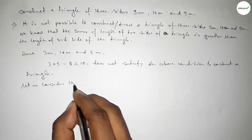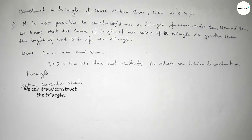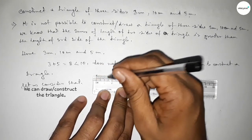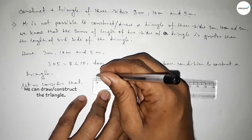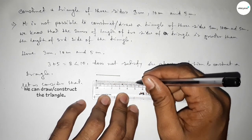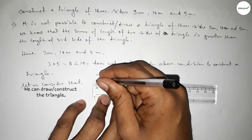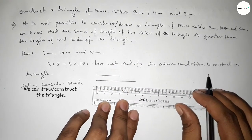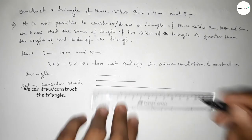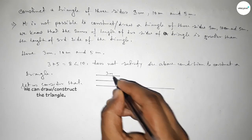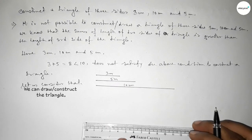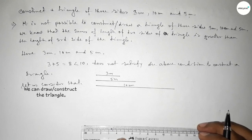Now let us assume we can construct a triangle with these three sides. Drawing the first side of 3 centimeter, then 5 centimeter, and then the last side of 10 centimeter. So this side is 3 centimeter, this side is 5 centimeter, and this side is 10 centimeter.